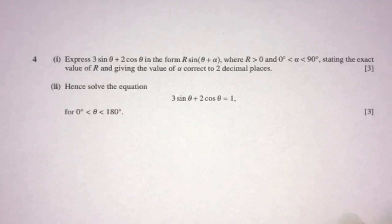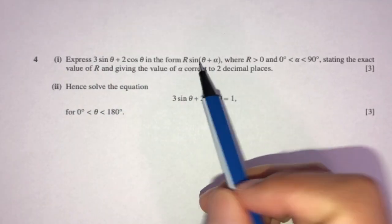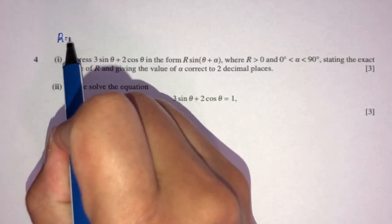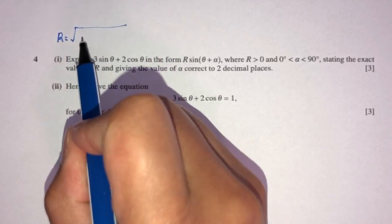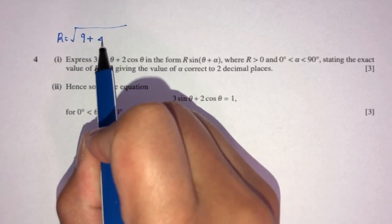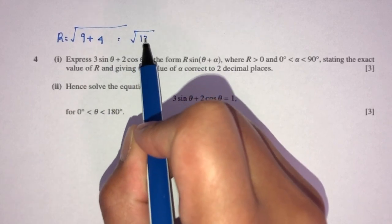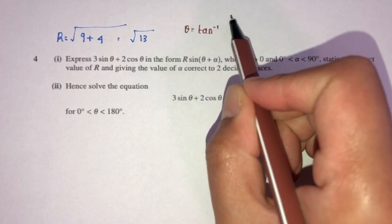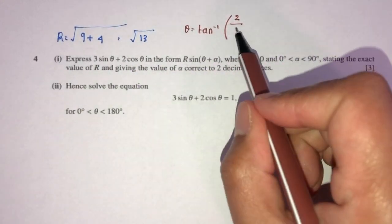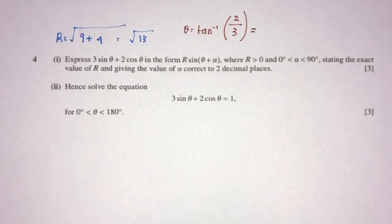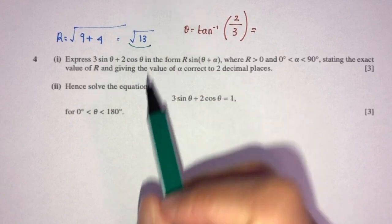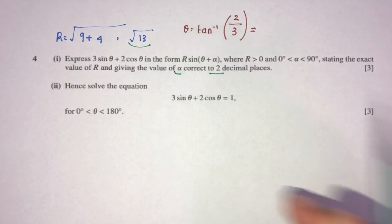Now let's move on to question number 4. We have to express this whole thing in the form R·sin(θ + α). r is equal to the square root of 3 squared plus 2 squared, which is root of 9 plus 4, so root of 13. The value of theta is tan inverse of 2 over 3. We have to provide the exact value of r, which is root of 13.